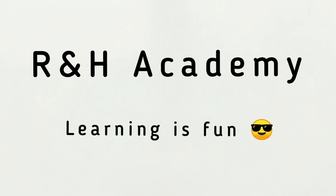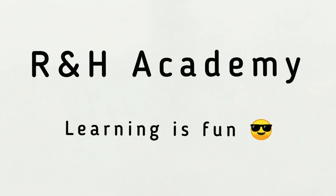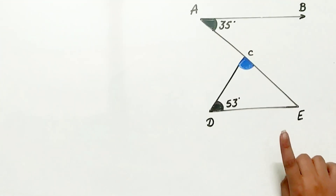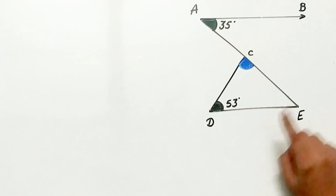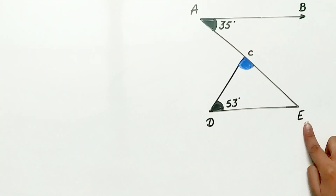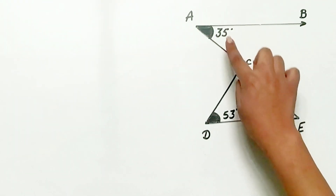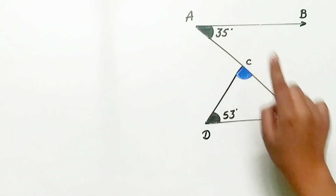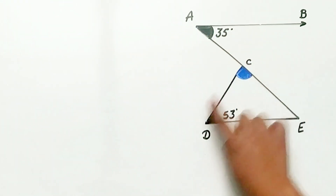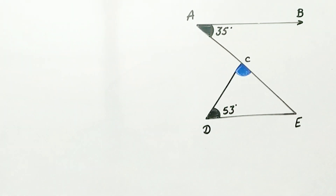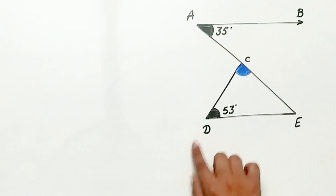Welcome to R&H Academy channel. Question 3 of exercise 6.3 says: in the figure, AB is parallel to DE, angle BAC is 35 degrees, and angle CDE is 53 degrees. We have to find angle DCE.